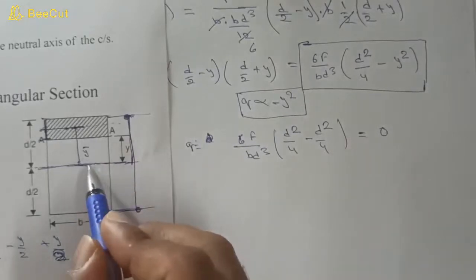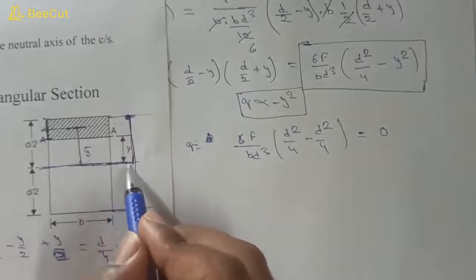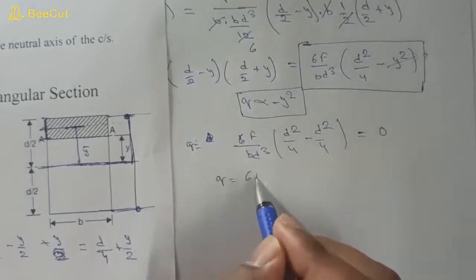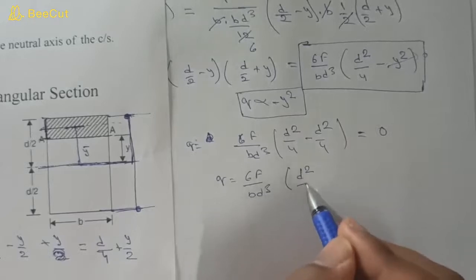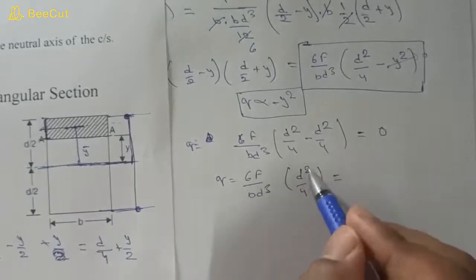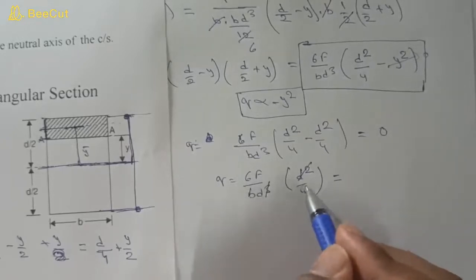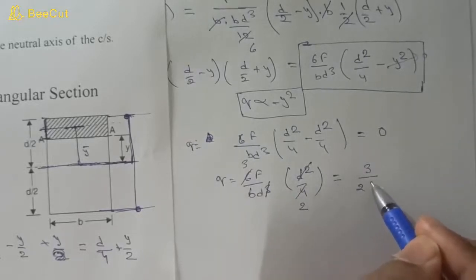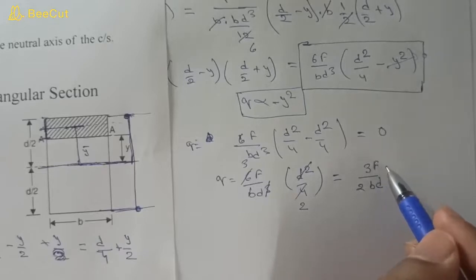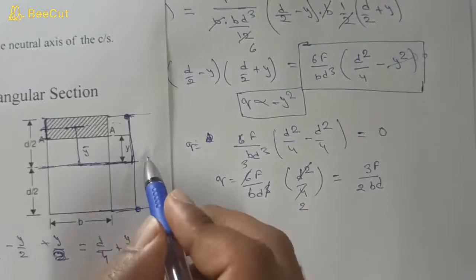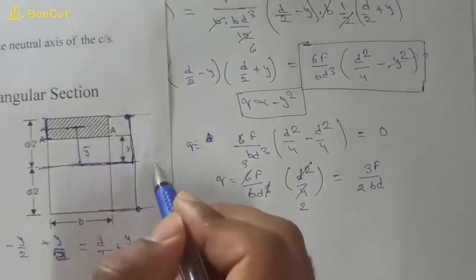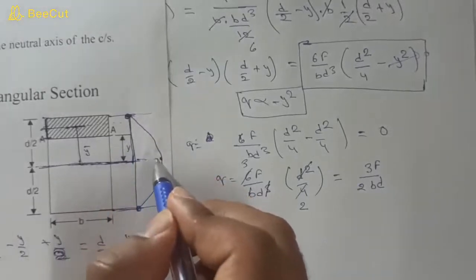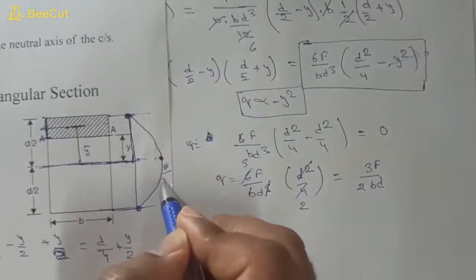At the neutral axis, Y = 0. Substituting: τ = 6F/(BD³) · D²/4 = 6F·D²/(4BD³) = 3F/(2BD). So the maximum shear stress occurs at the neutral axis and equals 3F/(2BD). The shear stress distribution is parabolic, going from 0 at the top and bottom edges to a maximum of 3F/(2BD) at the center.